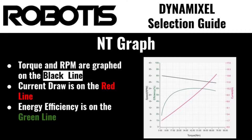The NT graph displays the motor's performance relationship between output speed, torque, current draw, and efficiency. Learning how to read this graph will give you the best idea of the expected performance of a Dynamixel actuator, as well as its ideal performance band and overall efficiency.